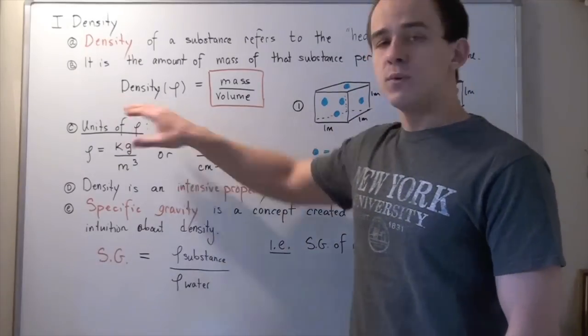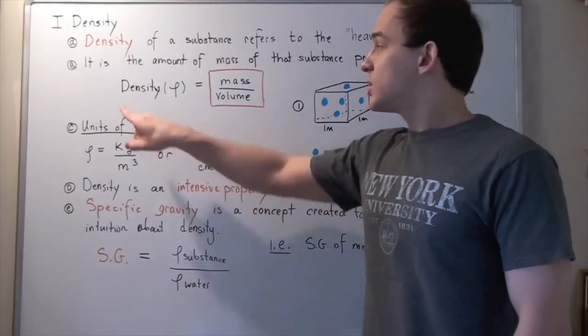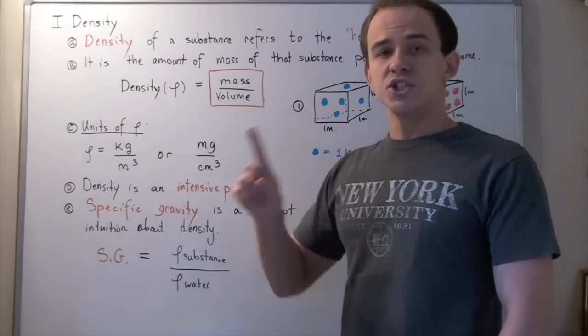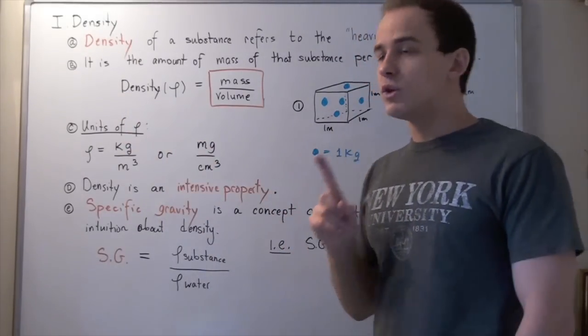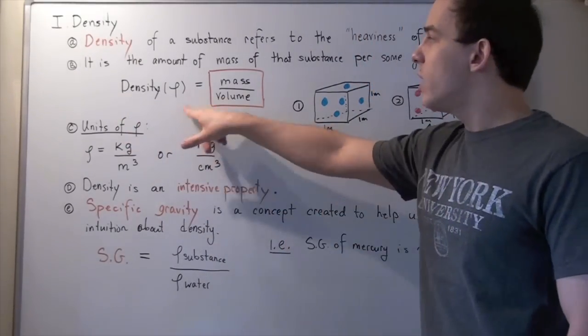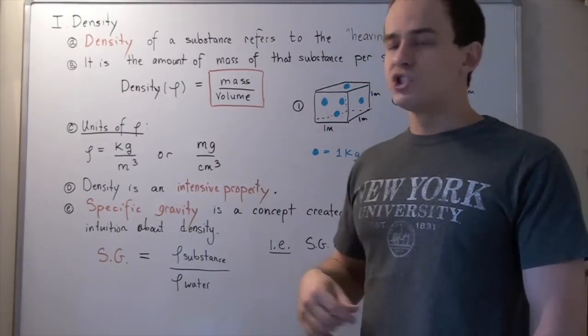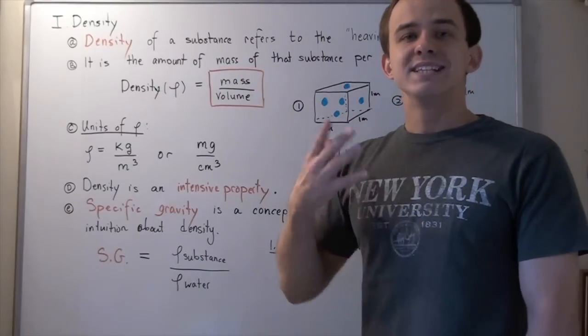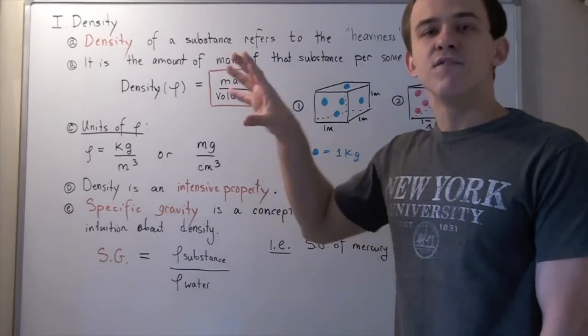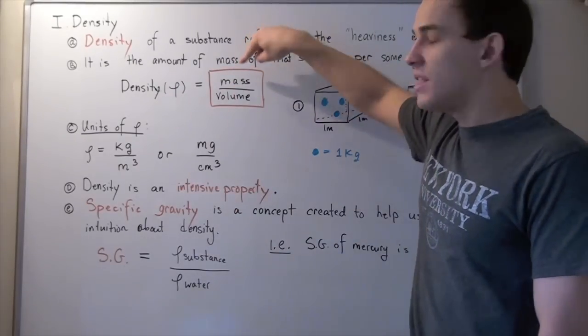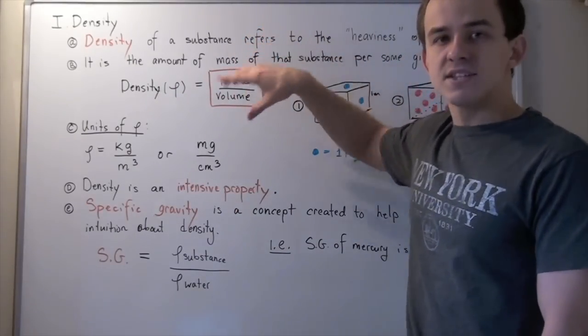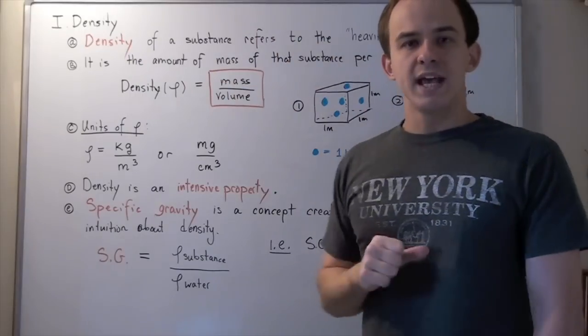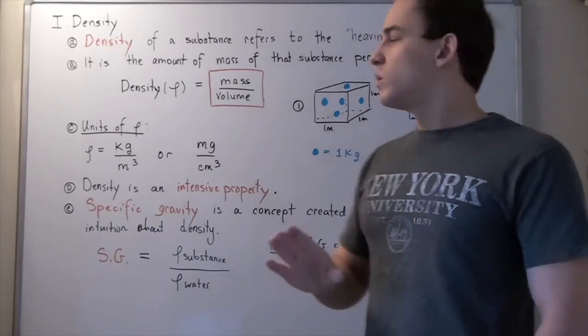Let's look at the following formula. Density, which is given by the Greek letter rho, is equal to mass of my substance divided by the volume that that mass is located in.